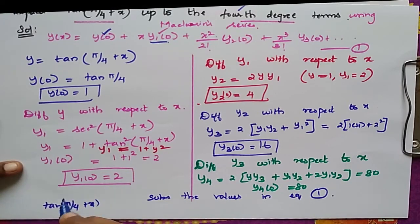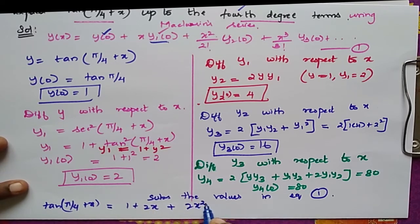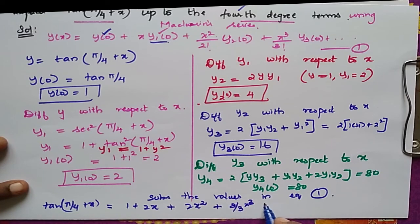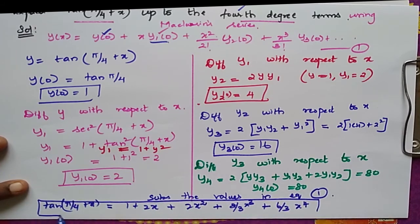Therefore, tan(π/4 + x) = 1 + 2x + 2x² + (8/3)x³ + (10/3)x⁴ + ... This is the Maclaurin series expansion.